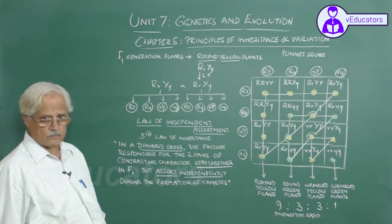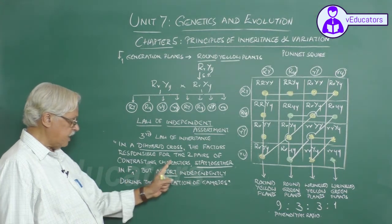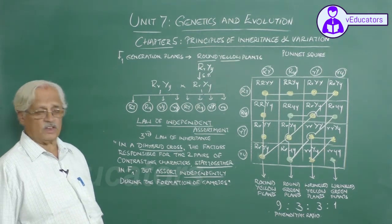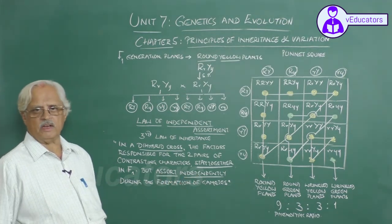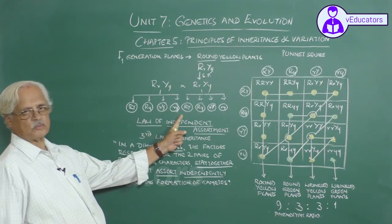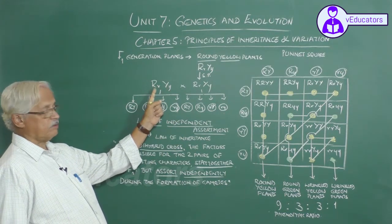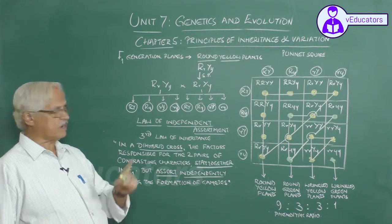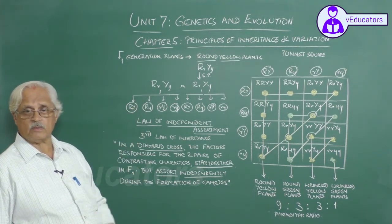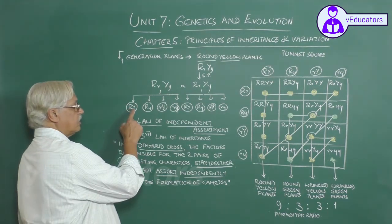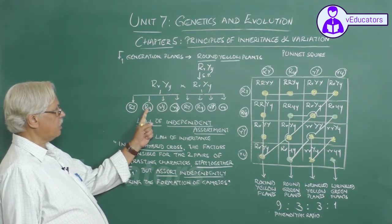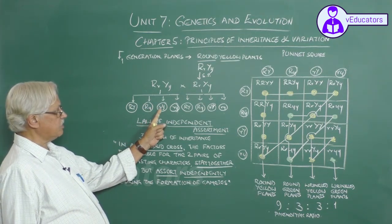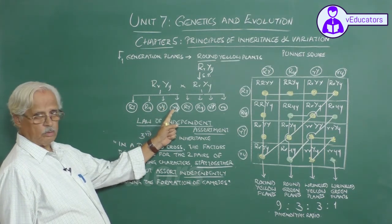In the monohybrid cross, we said the factors separate — segregate — during the formation of gametes. That law is called the law of segregation. Here, instead, we say assort independently. Each of the four types of gametes formed contains one factor responsible for seed coat and one factor responsible for colour of the cotyledon. So in gamete RY both factors are dominant; in Ry seed coat is dominant and cotyledon recessive; in rY seed coat is recessive and cotyledon dominant; in ry both are recessive.